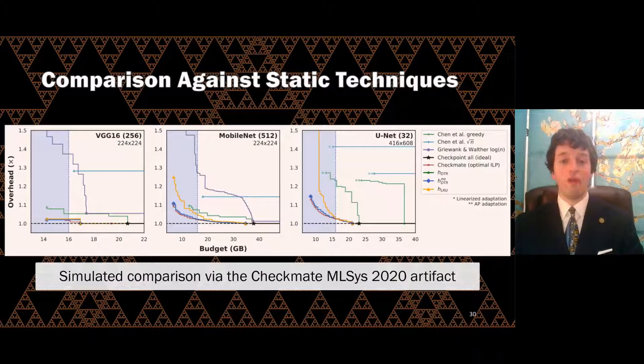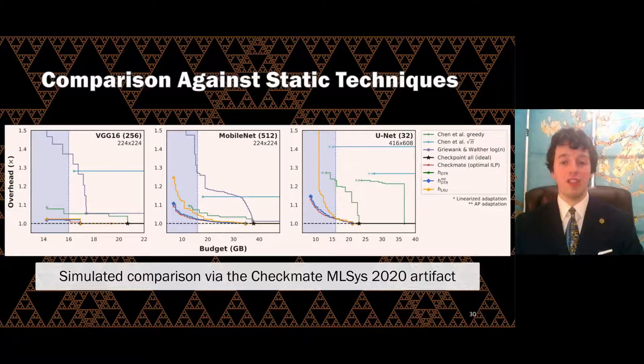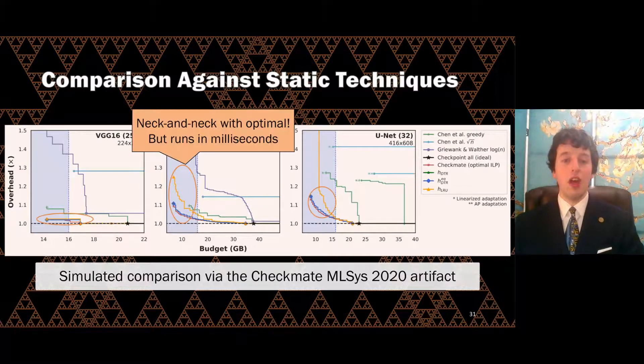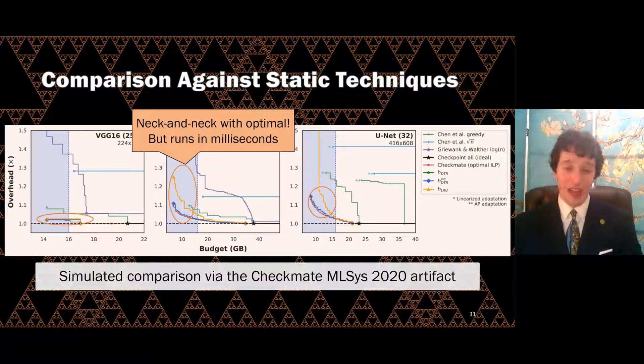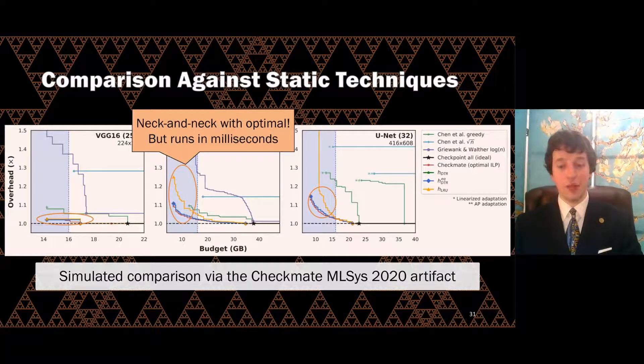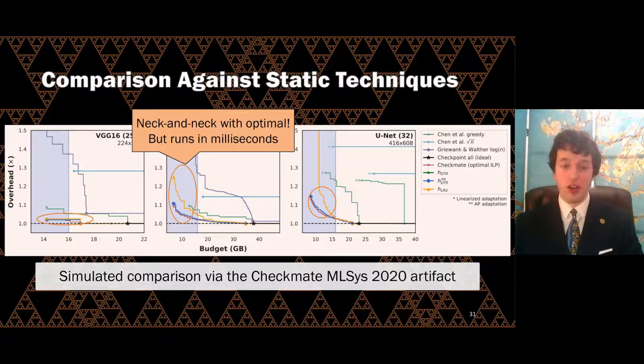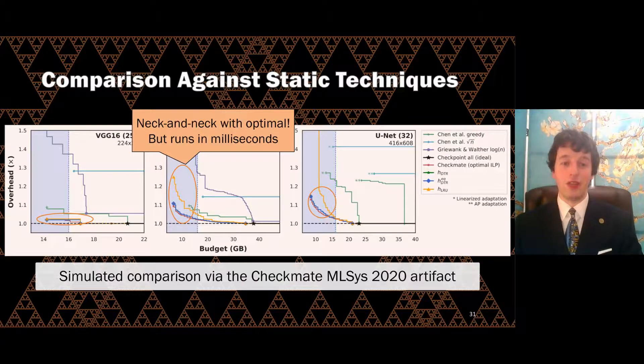Given the strong performance of our cost-staleness-size heuristics, we next compared their performance against static techniques, using the Checkmate MLSYS 2020 artifact to perform a direct comparison in simulation. We found that our cost-staleness-size heuristic was neck-and-neck with Checkmate's optimal solution, but ran much faster. Checkmate's ILP solver needed seconds per batch, even for these relatively small models, but DTR completed the same models in milliseconds. Even the simple LRU heuristic was able to hit lower budgets than many other static techniques.